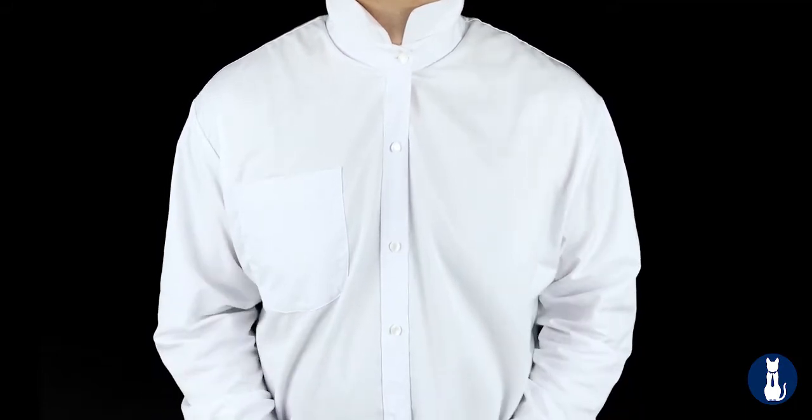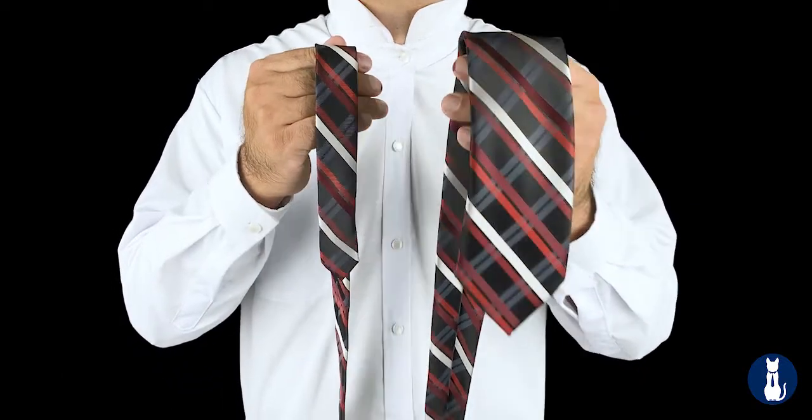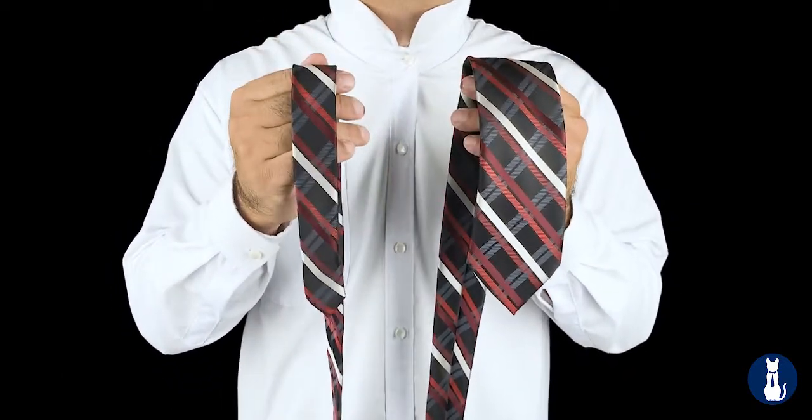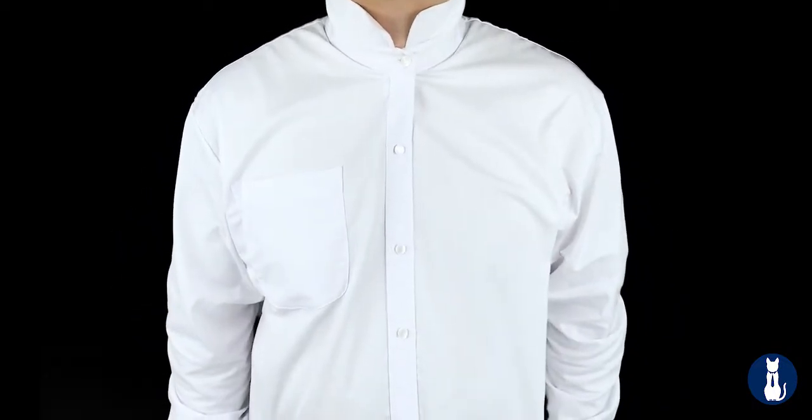Beforehand, take note that your tie has a fat end and a skinny end, the head and the tail. But it doesn't really matter which side of your body you put the head on, as the knot tying can be done either way.